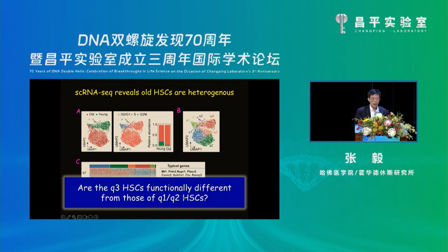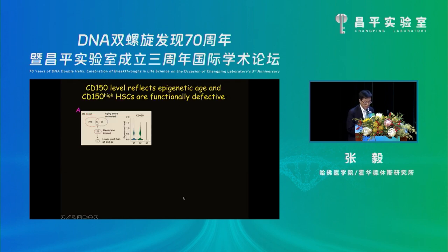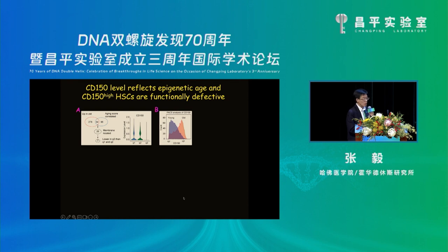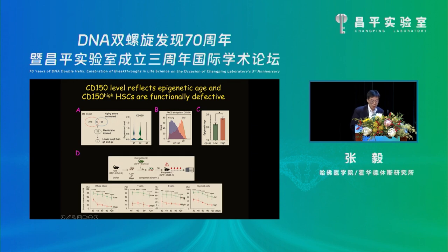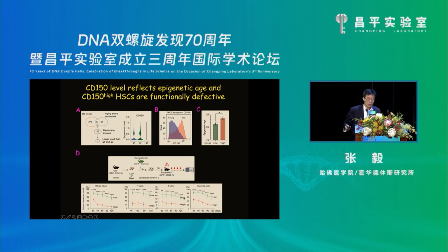We identified CD150 as a cell surface marker mainly expressed in Q1 and Q2, and very lowly expressed in Q3. In young mice, the majority of HSC express very low levels of CD150, while in old mice CD150 is highly expressed. When we do epigenetic age analysis, the CD150-low population is younger in epigenetic age than CD150-high, even though they come from the same mice — their chronological age is the same. After transplanting into mice in competition assays, CD150-low competed much better, contributing to T cells, B cells, and myeloid cells far better than CD150-high from the same old mice.